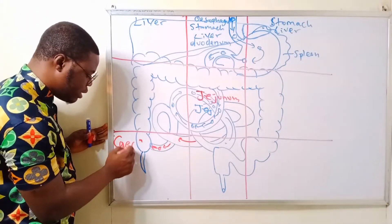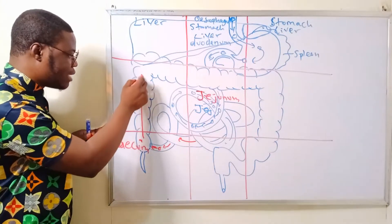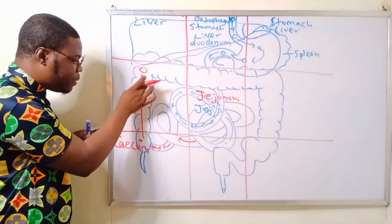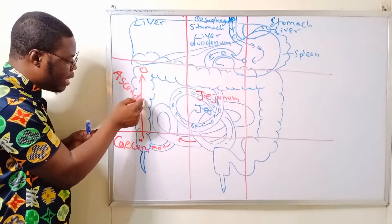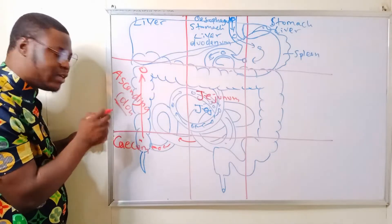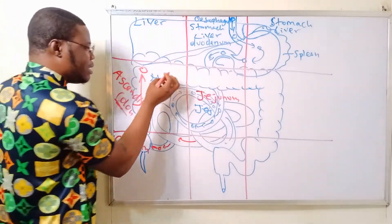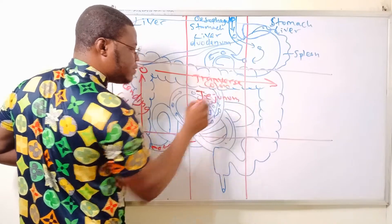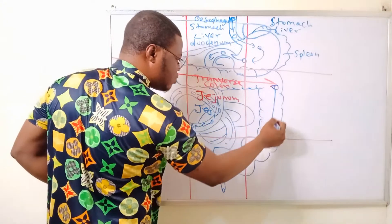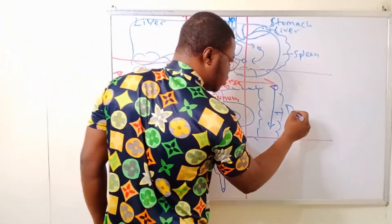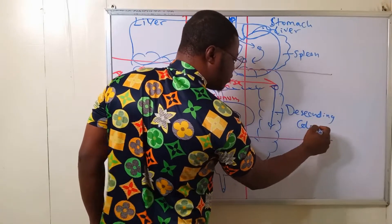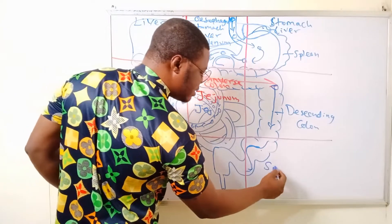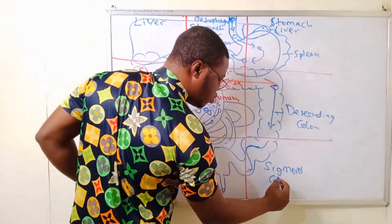From the ascending colon, food passes transversely through the transverse colon across the umbilical region, then descends through the descending colon in the left lumbar region. After that, it enters the S-shaped sigmoid colon in the left iliac region, and finally the remnant passes into the rectum in the hypogastric/pelvic region, then to the anal canal and anus.